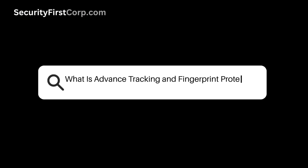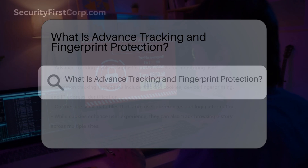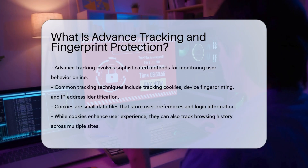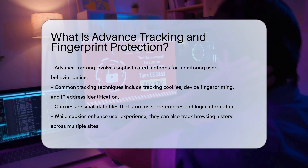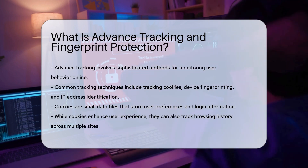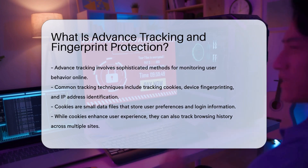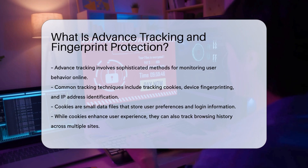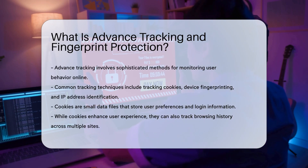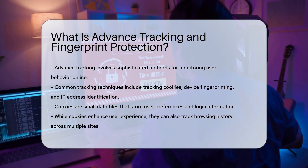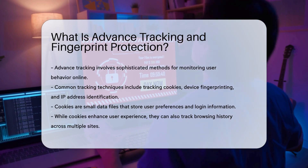What is advanced tracking and fingerprint protection? Advanced tracking refers to sophisticated methods used by various entities to monitor user behavior online. This includes tracking cookies, device fingerprinting, and IP address identification. Each of these methods collects data that can paint a detailed picture of an individual's online habits.